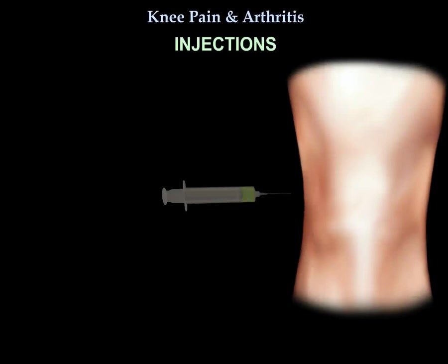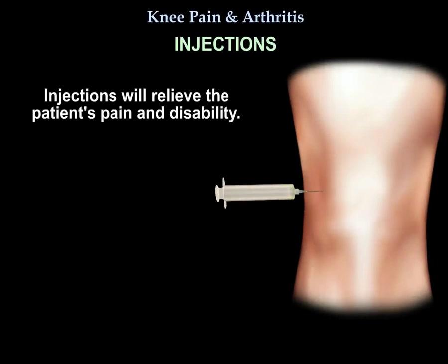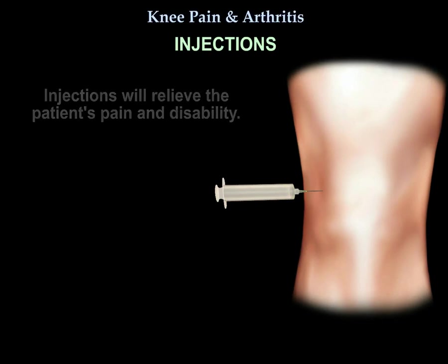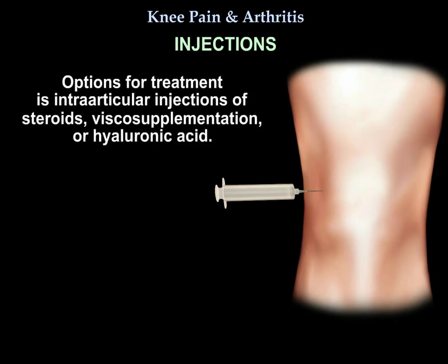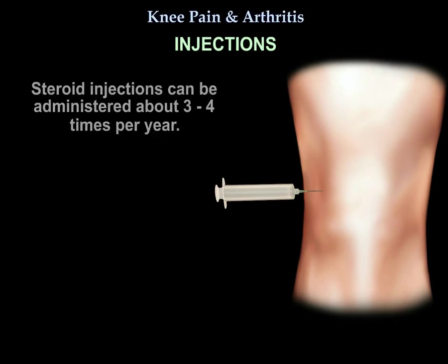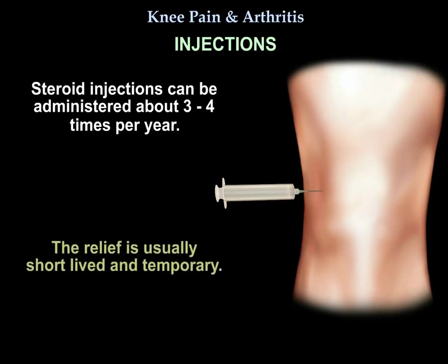Injections will relieve the patient's pain and disability. Options for treatment include intraarticular injections of steroids, viscous supplementation, or hyaluronic acid. Steroid injections can be administered about three to four times per year. They are usually short-lived, and the relief is usually temporary.